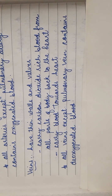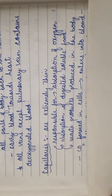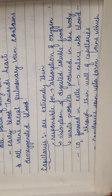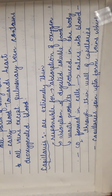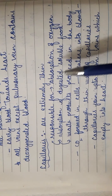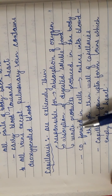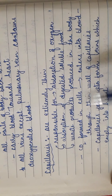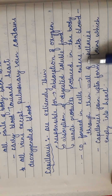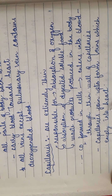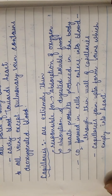The next component is capillaries. Capillaries are extremely thin. They are responsible for absorption of oxygen, absorption of digested soluble food, and waste products produced in the body. Carbon dioxide formed in the cells enters the blood through the thin walls of capillaries. Capillaries join up to form veins which empty into the heart.